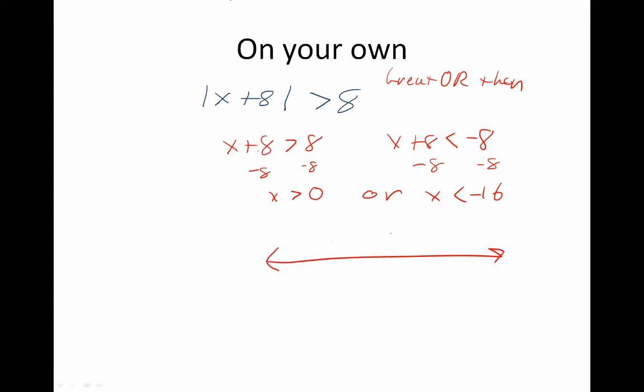And if I graphed it, I would have a 0 there and a negative 16 way over there. It's two open circles: greater than 0, which is all of that, and less than negative 16, which is all of that. So there's your first one.